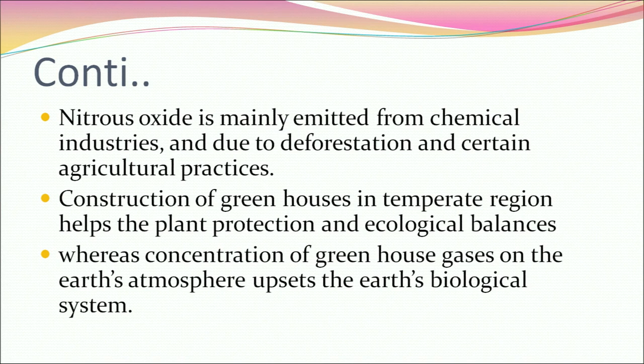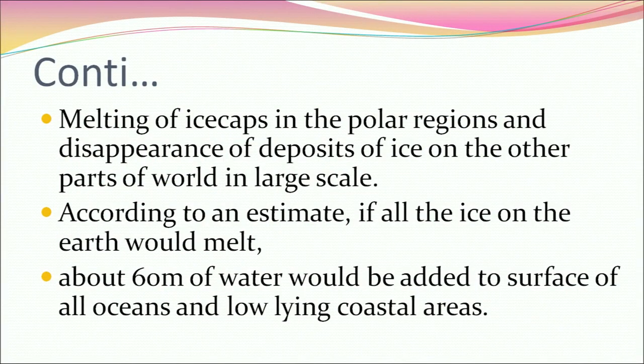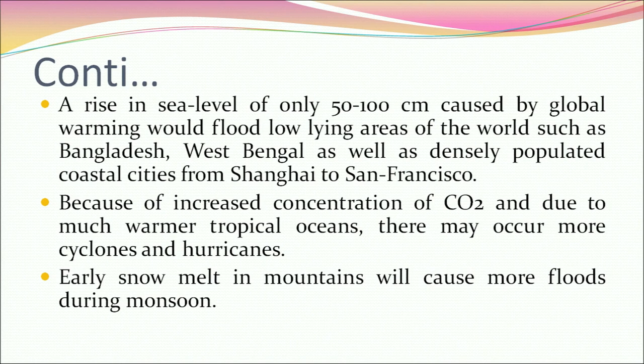Concentration of greenhouse gases in the earth's atmosphere upsets the earth's biological system. It is estimated that if the present rate of CO2 increase continues, atmospheric temperature will rise by 2°C to 3°C by the end of the 21st century. This will result in the receding of many glaciers, melting of ice caps in polar regions, and disappearance of ice deposits worldwide. If all the ice on earth melted, about 60 meters of water would be added to all ocean surfaces.